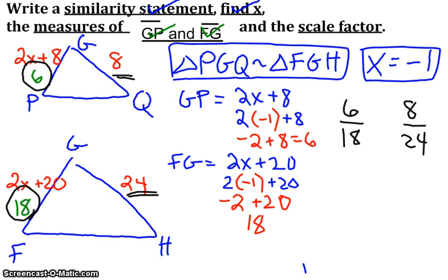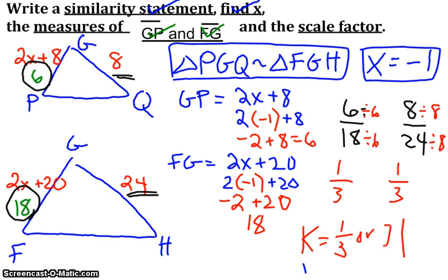Well, both of these, 6 and 18, can be divided by 6. So you end up with 1 over 3. Now hopefully my other fraction will be the same thing, and sure enough, it works. 8 over 24, you can divide top and bottom by 8, so you end up with 1 over 3. So your scale factor is 1 third, or it's 3.